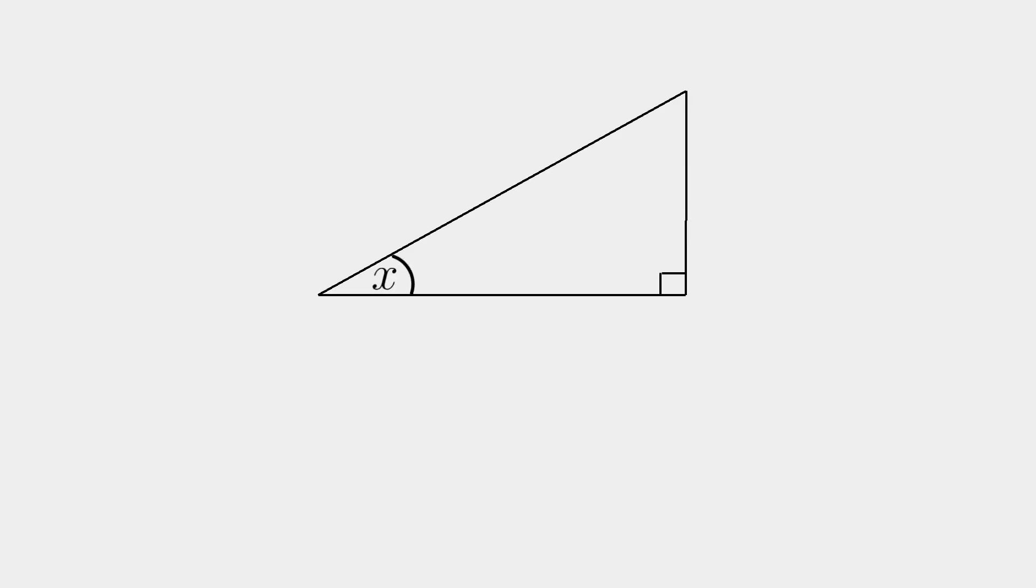When you have a right angle triangle you can use the basic trigonometry functions. The side in terms of angle X is as follows. The slanted height opposite of the right angle is the hypotenuse.